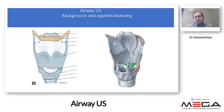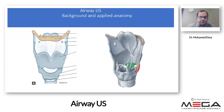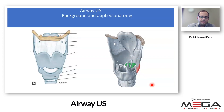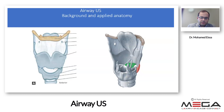The larynx is formed of a cartilaginous skeleton, muscles, membranes, and ligaments. The cartilaginous skeleton is formed of three main unpaired cartilages: the thyroid cartilage, the cricoid cartilage, and the epiglottis, which arises mainly from the back surface of the thyroid cartilage. It also has three small paired cartilages: the arytenoid, corniculate, and cuneiform. The vocal cords extend from the arytenoid to the back surface of the thyroid cartilage.